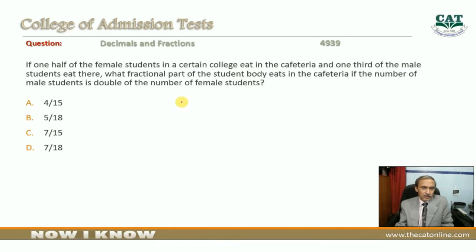If one half of the female students in a certain college eat in the cafeteria and one-third of the male students eat there, what fractional part of the student body eats in the cafeteria if the number of male students is double the number of female students?